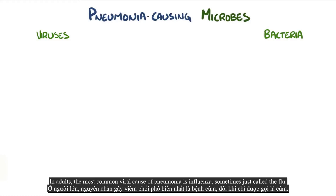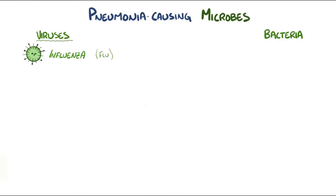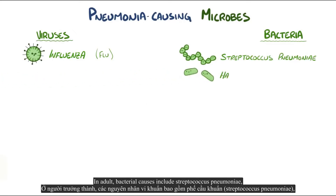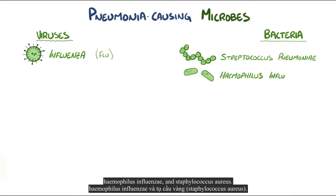In adults, the most common viral cause of pneumonia is influenza, sometimes just called the flu. Bacterial causes in adults include Streptococcus pneumoniae, Haemophilus influenzae, and Staphylococcus aureus.